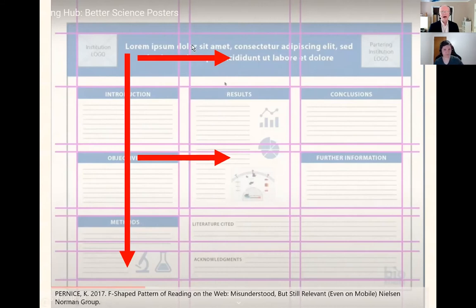They'll look at the top and scan the top, and then they'll start looking down the poster to look for information. As they do that, because we read in Western languages left to right, they will look over. And so it gives this F-shaped pattern, which is a very common way that people will read posters.